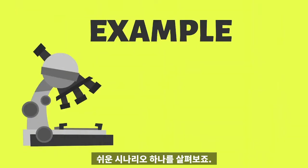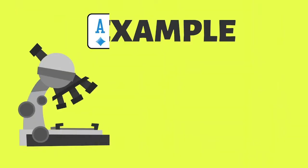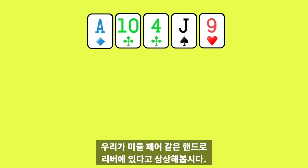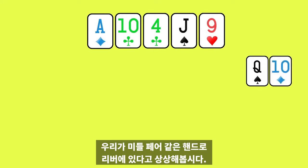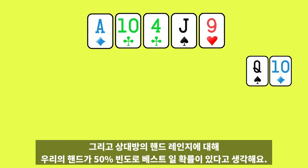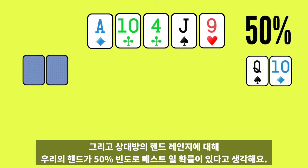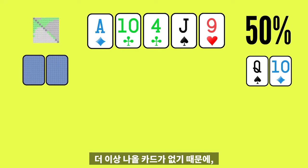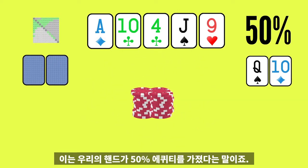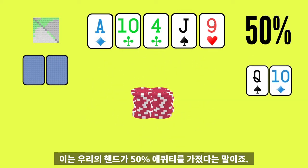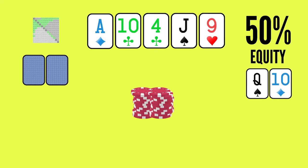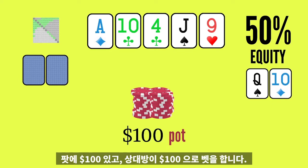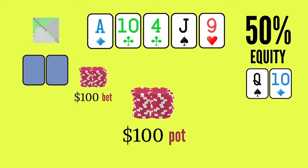Let's examine a simple scenario. Imagine we're on the river with a hand like middle pair, and we expect our hand to be the best 50% of the time against our opponent's range of hands. Since there are no more cards to come, this means our hand has 50% equity. There's $100 in the pot, and our opponent bets $100. Should we call?